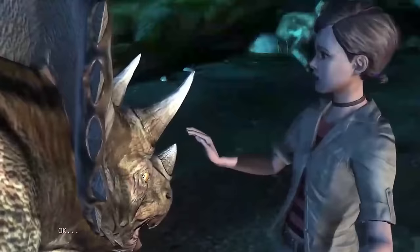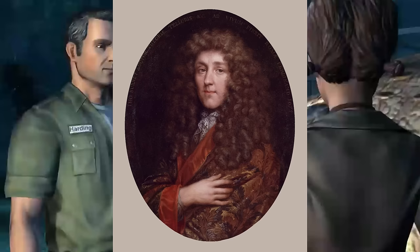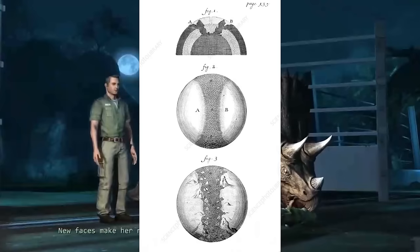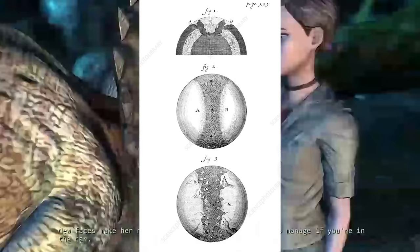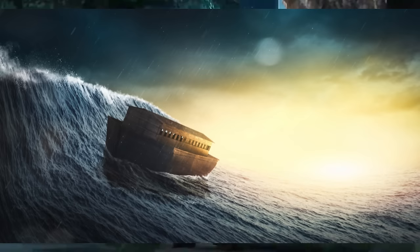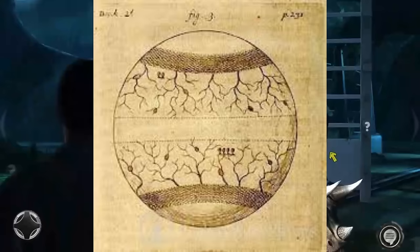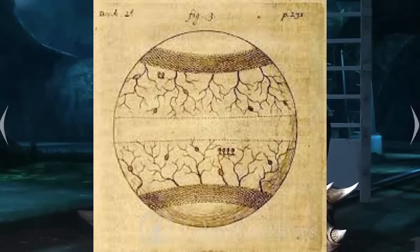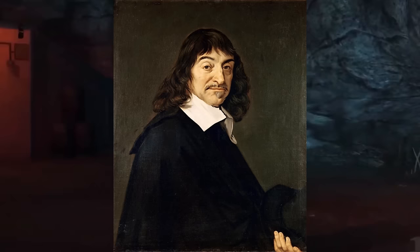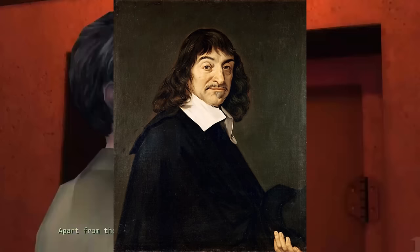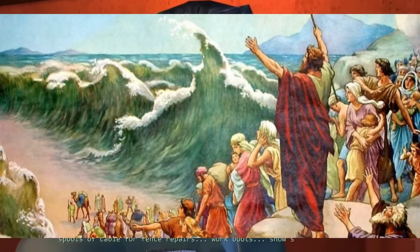Thomas Burnett was an English clergyman and geological theorist, best known for his work 'Sacred Theory of the Earth,' first published in Latin in 1681 and later translated into English. In this speculative cosmogony, Burnett proposed a hollow Earth with most of its water inside until Noah's flood, at which point mountains and oceans appeared. He suggested the Earth was originally a perfect sphere and that divine catastrophes, including flooding and earthquakes, led to its current uneven and mountainous state. Burnett's theory attempted to reconcile Descartes' mechanical explanation of Earth's formation with the biblical account of creation in Genesis.